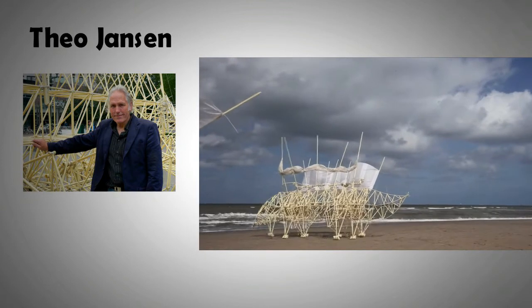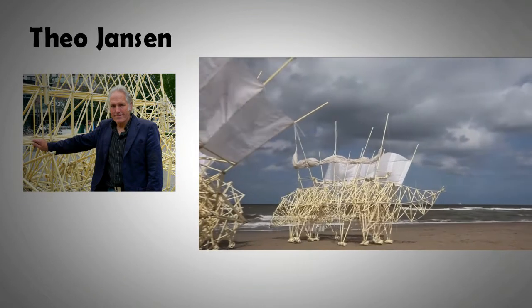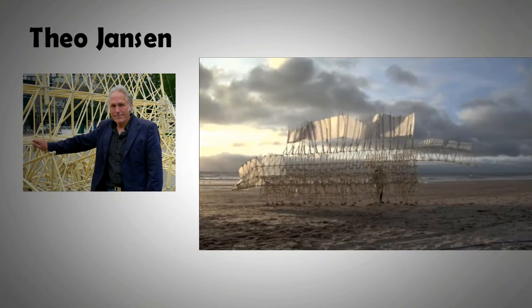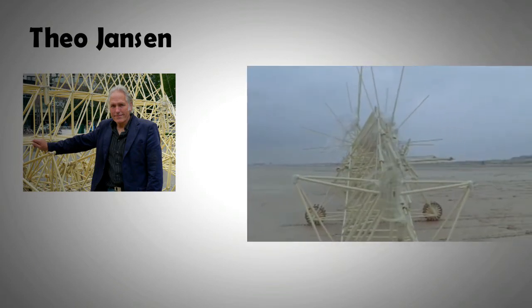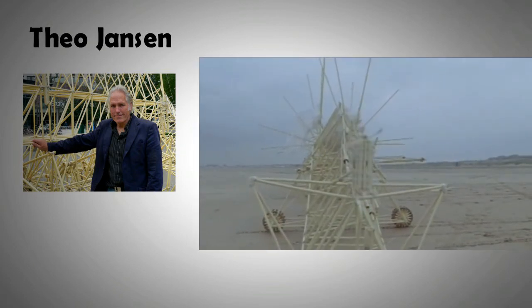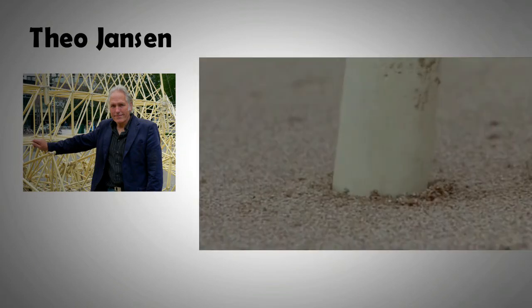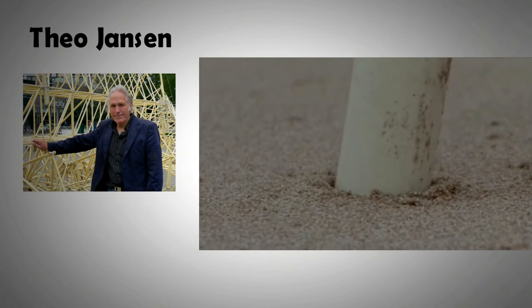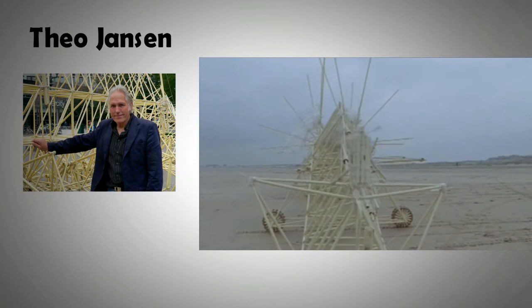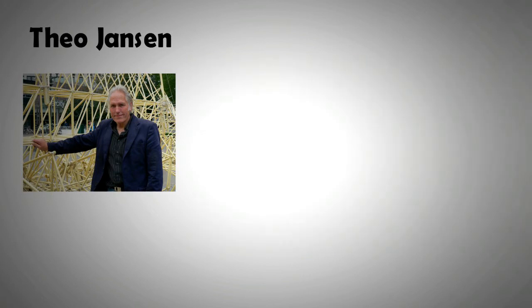He added additional limbs for greater stability and smoothness of travel. As a result, the first strand beast was born. His designs would later feature flapping wings, mimicking avian creatures. Using PVC bottles and tubes, he was also able to harness compressed air, which was used for performing intelligent functions.